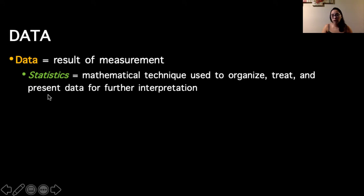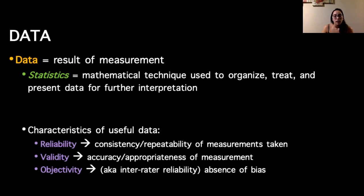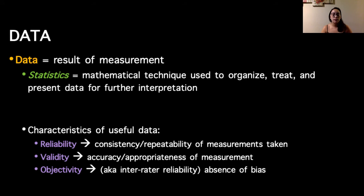There are three characteristics of useful data to keep in mind. Reliability looks at the consistency or repeatability of measurements taken — are we able to achieve relatively the same results when applying the same procedures to different test subjects? If outcomes vary greatly from person to person, that's a red flag that the measurement or protocol is not reliable, and therefore your data is not consistent.